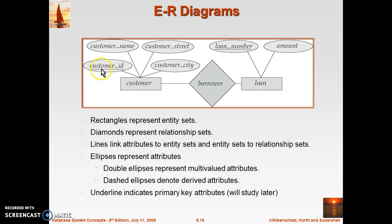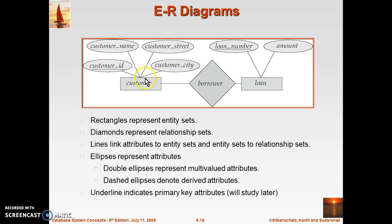You may notice that the customer ID attribute and loan number attribute are underlined. These are called key attributes. Key attributes are unique attributes — the value of key attributes is always unique.